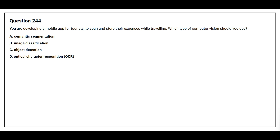Question number 244. You are developing a mobile app for tourists to scan and store their expenses while traveling. Which type of computer vision should you use? Option A: Semantic Segmentation. Option B: Image Classification. Option C: Object Detection. Option D: Optical Character Recognition. The correct answer is option D, Optical Character Recognition.